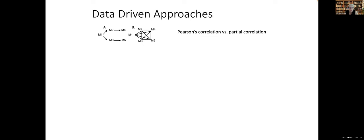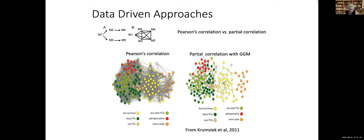The approach that we took as an alternative to knowledge-based analysis is a data-driven approach. We chose to use partial correlations for doing this. I'm not going to focus much on the algorithms today because we've talked about the algorithm we developed and were using before, and this has been published — so details are available. I'll just highlight the advantages of using partial correlations compared to, for example, Pearson's correlations.